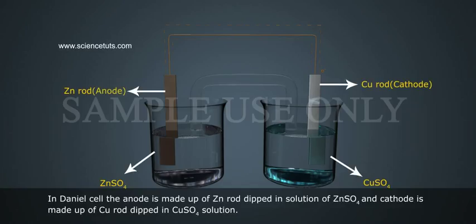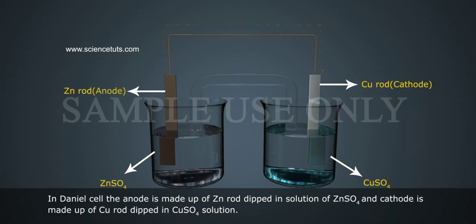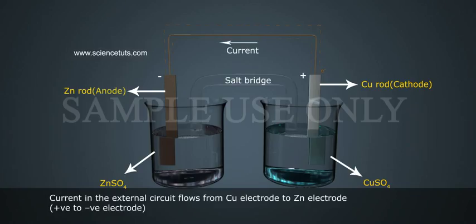In Daniel's cell, the anode is made up of a zinc rod dipped in a solution of zinc sulfate, and the cathode is made up of a copper rod dipped in copper sulfate solution. Current in the external circuit flows from the copper electrode to the zinc electrode, that is, from positive to negative electrode.